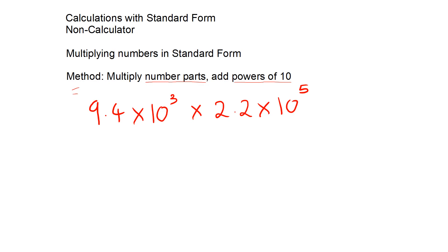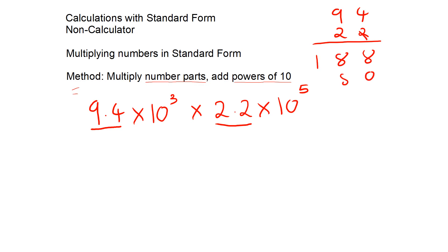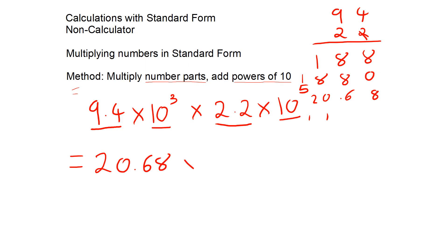In this next example, we're going to need to put the answer back into standard form. We would do 9.4 multiplied by 2.2, so I'm going to do 94 times 22 and then put the decimal point back twice. That gives 20.68, and for the powers of 10, 10 to the 3 multiplied by 10 to the 5 gives 10 to the 8. But this is not standard form, because 20.68 is bigger than 10.